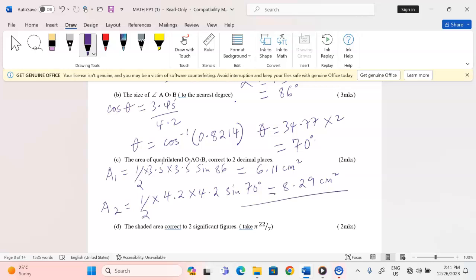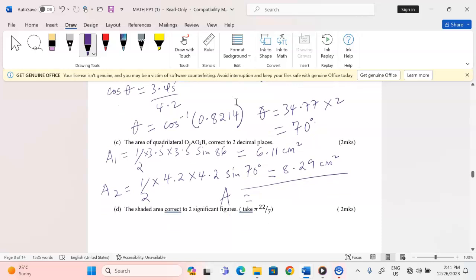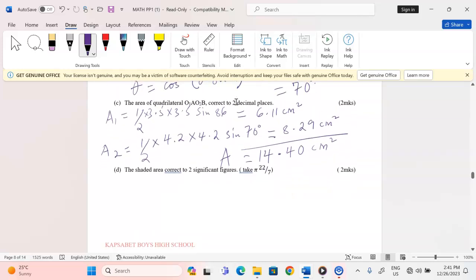Therefore, the total area is going to be when we add the two now, 6.11 plus 8.29, and I'm going to get 14.40 square centimeters. So that is the area of the quadrilateral.